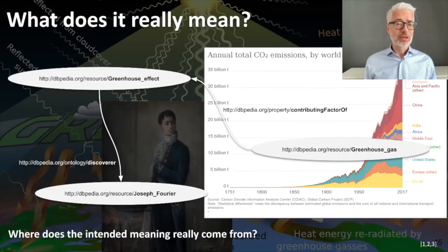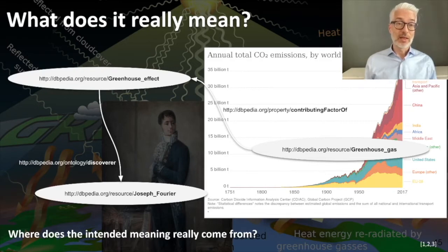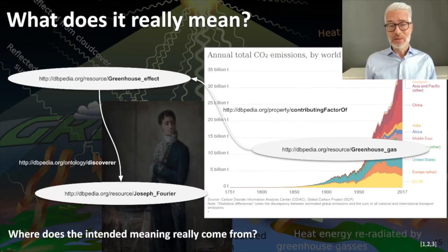Before we go deeper into that, let's first have a look at the following RDF statements, here given as a graph. You have here the greenhouse effect and you have here greenhouse gas. Greenhouse gas is a contributing factor of the greenhouse effect, which was discovered by Joseph Fourier. But why do we know that this really means exactly what we are telling you? Most likely because we have used in the URIs self-speaking names and of course we have knowledge about language and therefore know what these things mean.